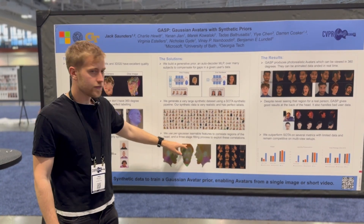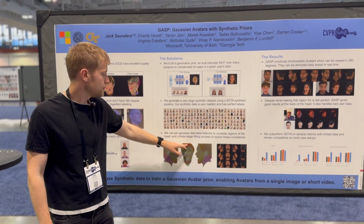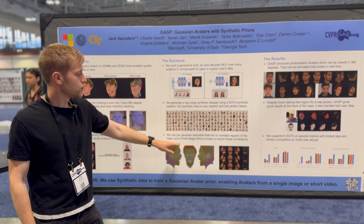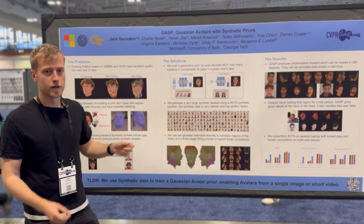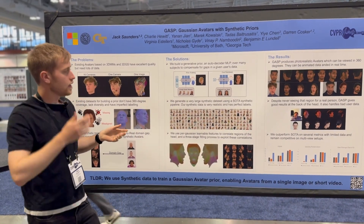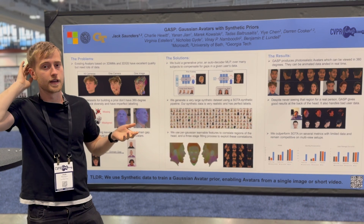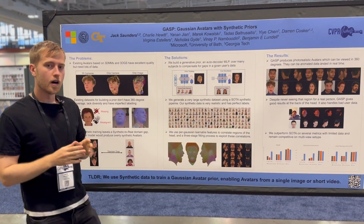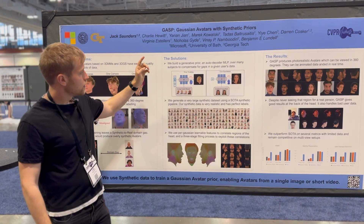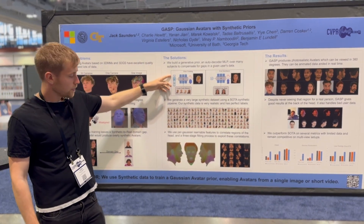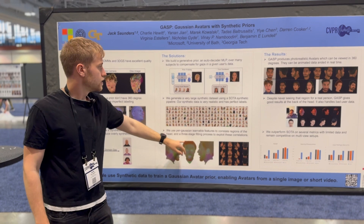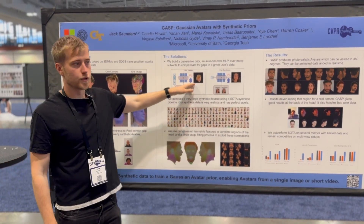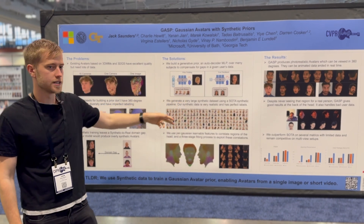The way we do this is with per-Gaussian features. We have a feature vector associated with each Gaussian, and that is essentially a semantic representation — for example, this is a hair Gaussian, and on the back of the head is also a hair Gaussian, so they're very similar in feature space. Our model then takes a representation of identity together with these feature vectors, and it will produce the Gaussian properties for that: the color, the shape, the rotation, et cetera.